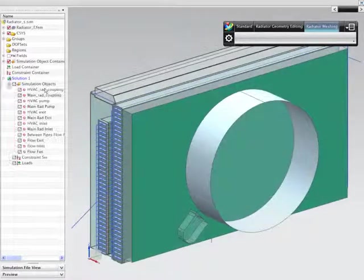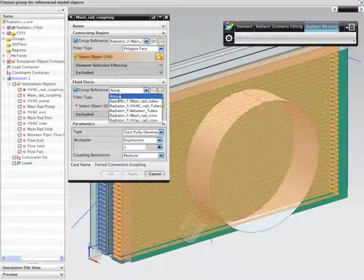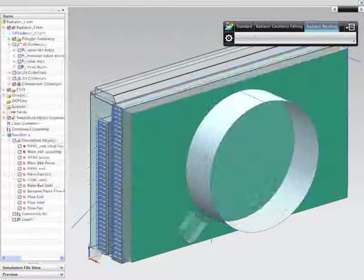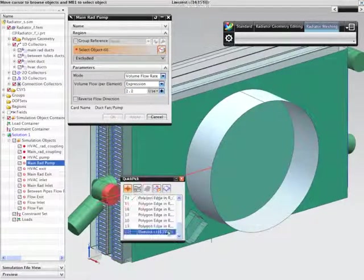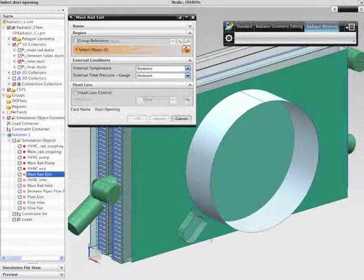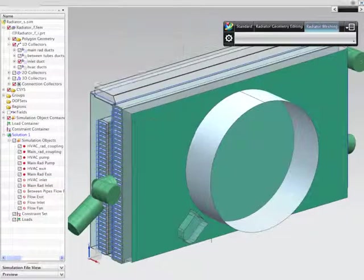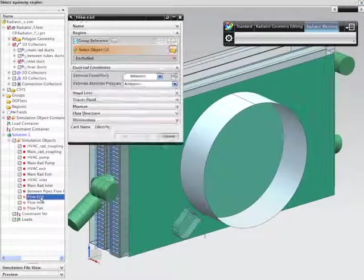With the mesh complete, the analyst applies boundary conditions to define convection between the radiator and air, coolant volume flow through the coolant ducts, the inlet and outlet temperatures of the radiator ducts, and definition of the airflow passing through the radiator and fan.